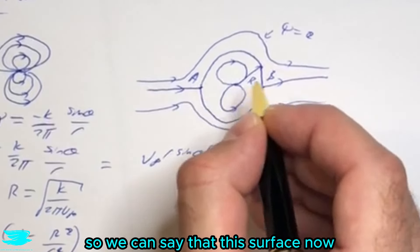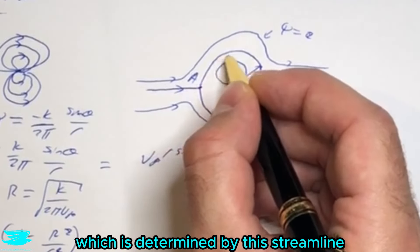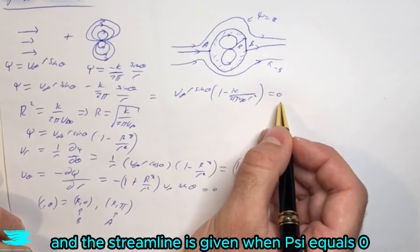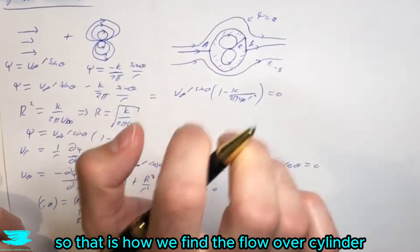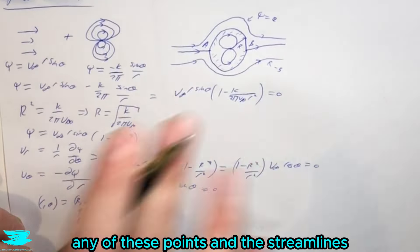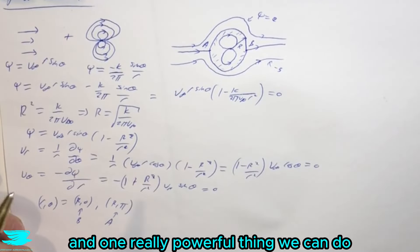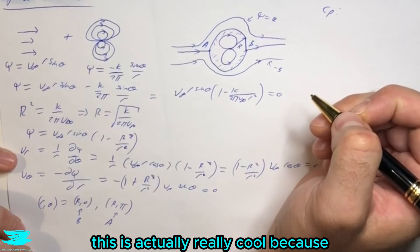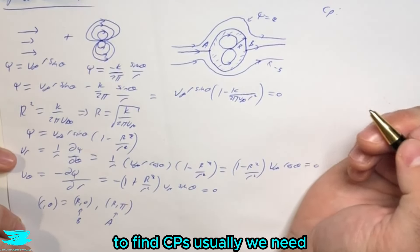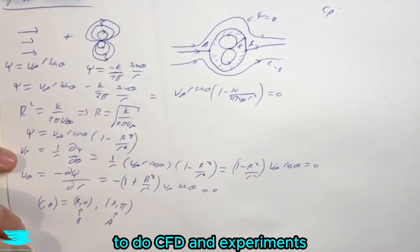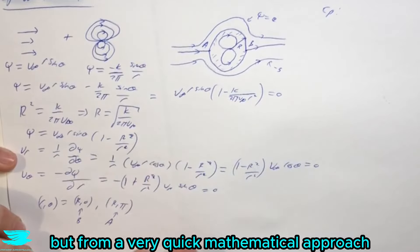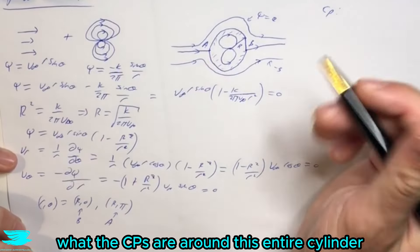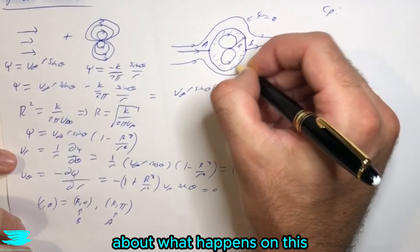So we can say that the surface defined by this dividing streamline ψ = 0 is a solid cylinder. That is how we find the flow over a cylinder, the velocity at any point around it, and the streamlines. But there's one more really important and powerful thing we can do: find the pressure coefficient anywhere along the cylinder's surface — something that normally requires CFD or experiments, but here we can get it quickly from potential flow.